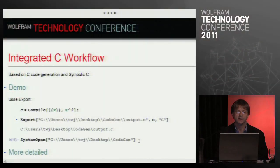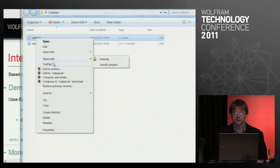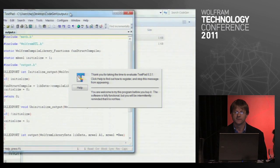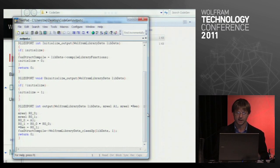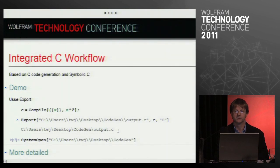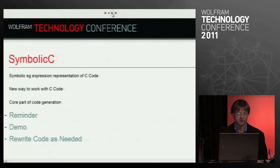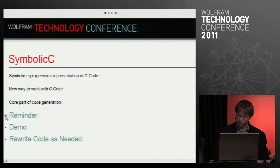One type of this was adding more features for integrating with C code. We hooked up a code generator that lets you build stand-alone code that could run outside of Mathematica, generated from the Mathematica compiler. Here's a stand-alone piece of code you could compile into a library or another application that would execute independently of Mathematica. An underlying feature behind this was the symbolic C feature — a symbolic representation of C code, a nice way to work with C code.